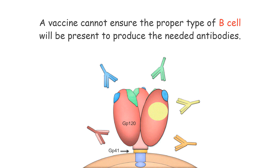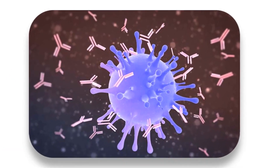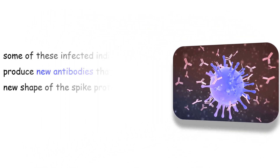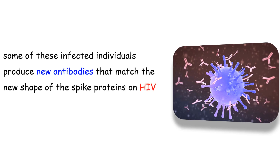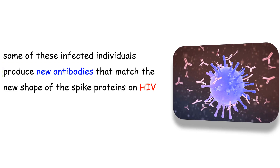Another approach has been examined after it was discovered that some individuals infected with HIV have been able to produce enough antibodies to control the HIV infection within themselves. The virus continues to mutate as it spreads within infected individuals, and the spike proteins take new shapes, meaning previously developed antibodies are ineffective. However, some of these infected individuals produce new antibodies that match the new shape of the spike proteins on HIV. When the virus mutates again and the spike proteins change shape, these individuals are again capable of producing new antibodies that bind the new batch of spike proteins and stop the infection.